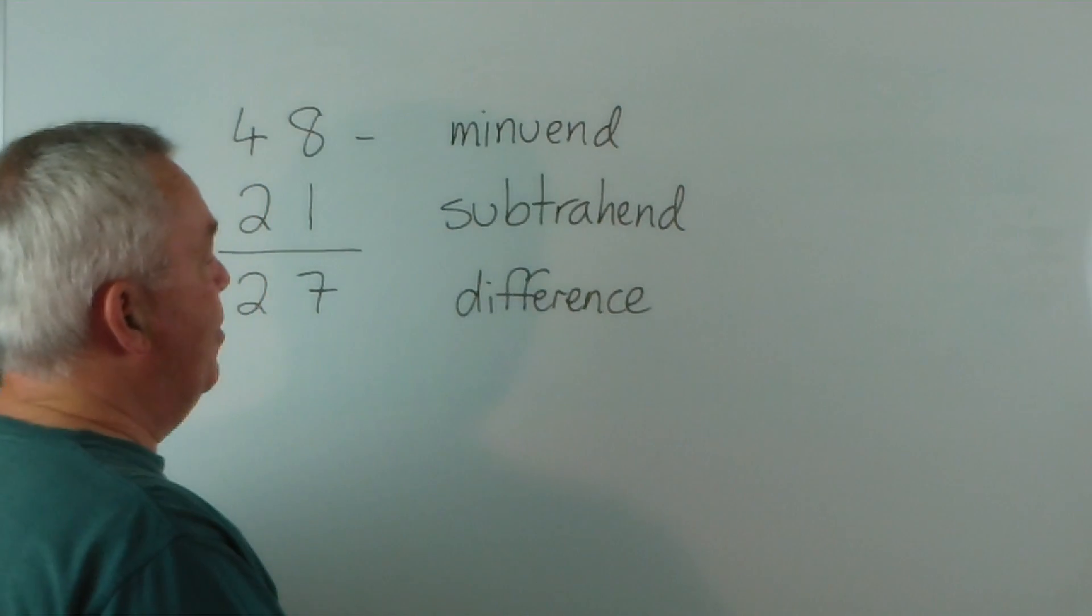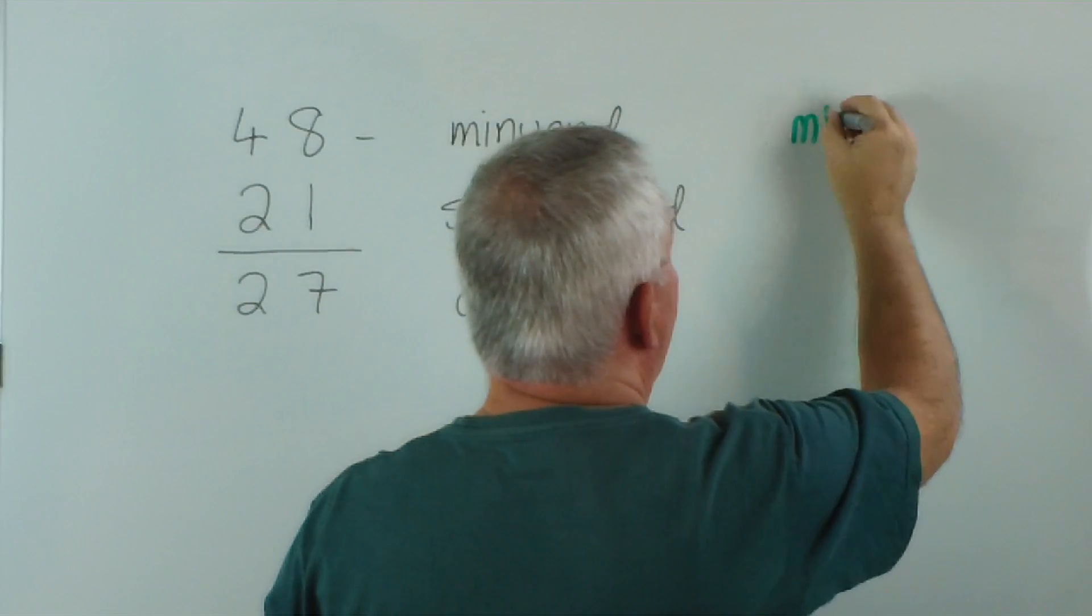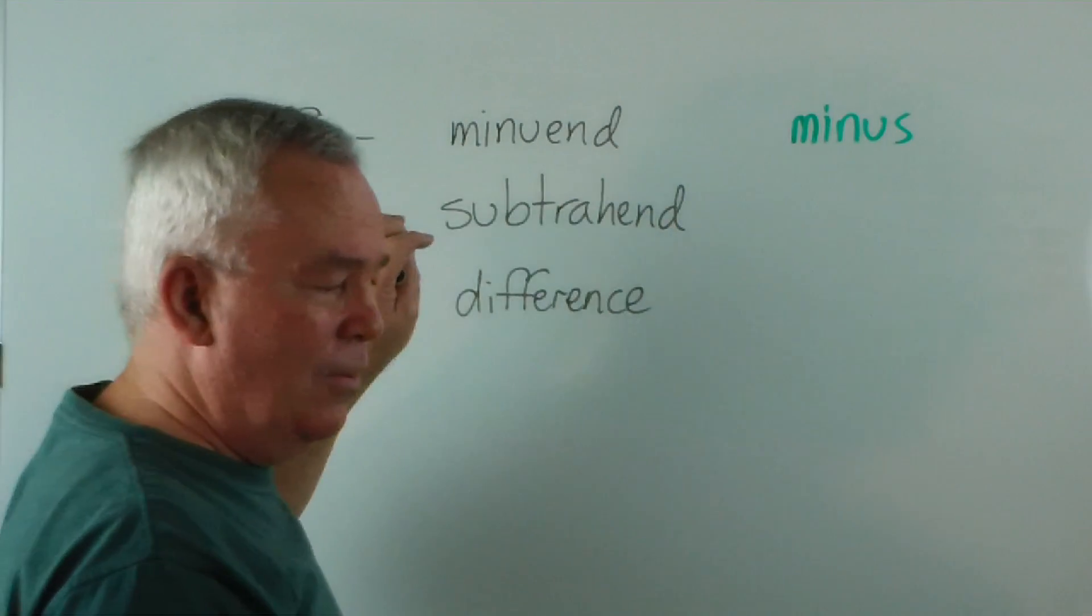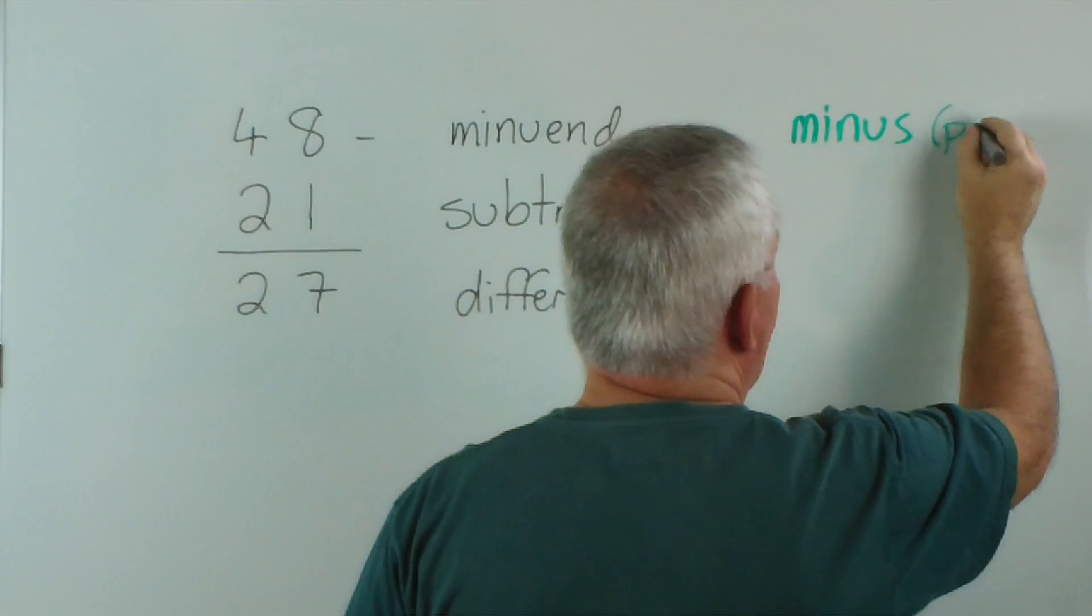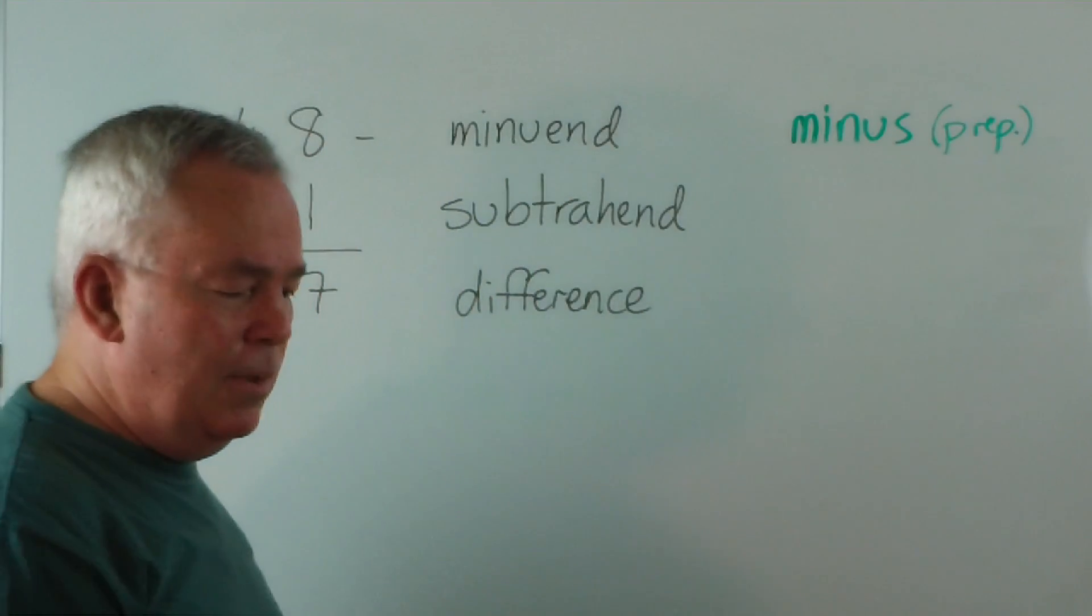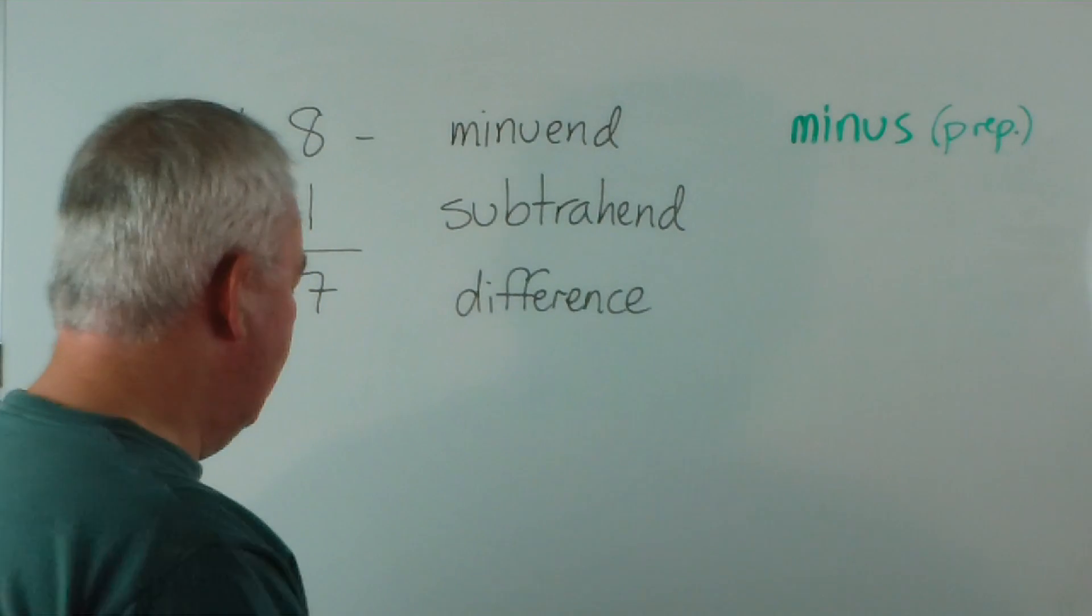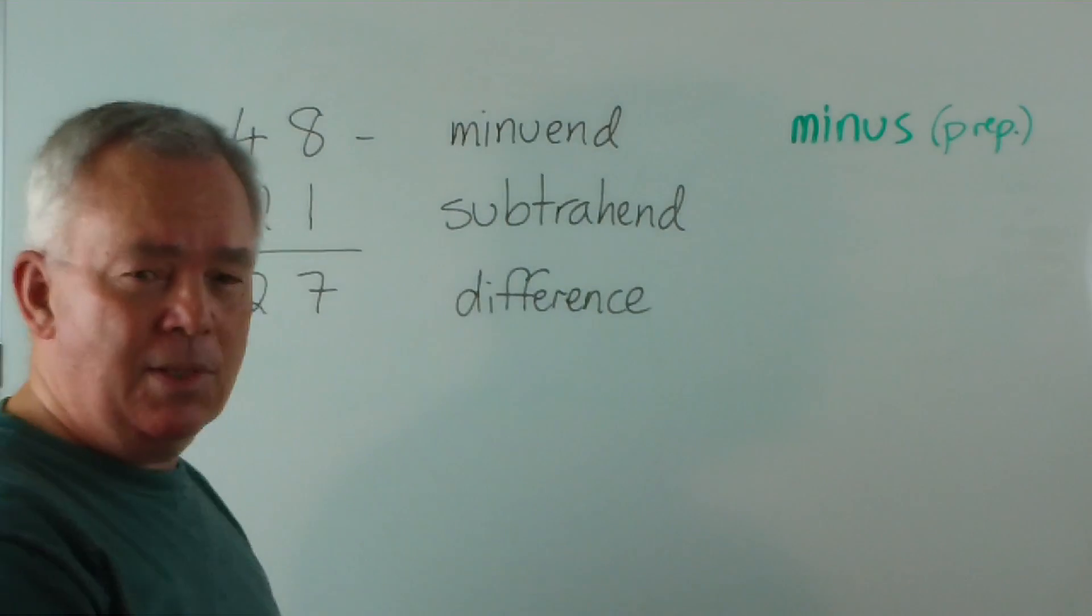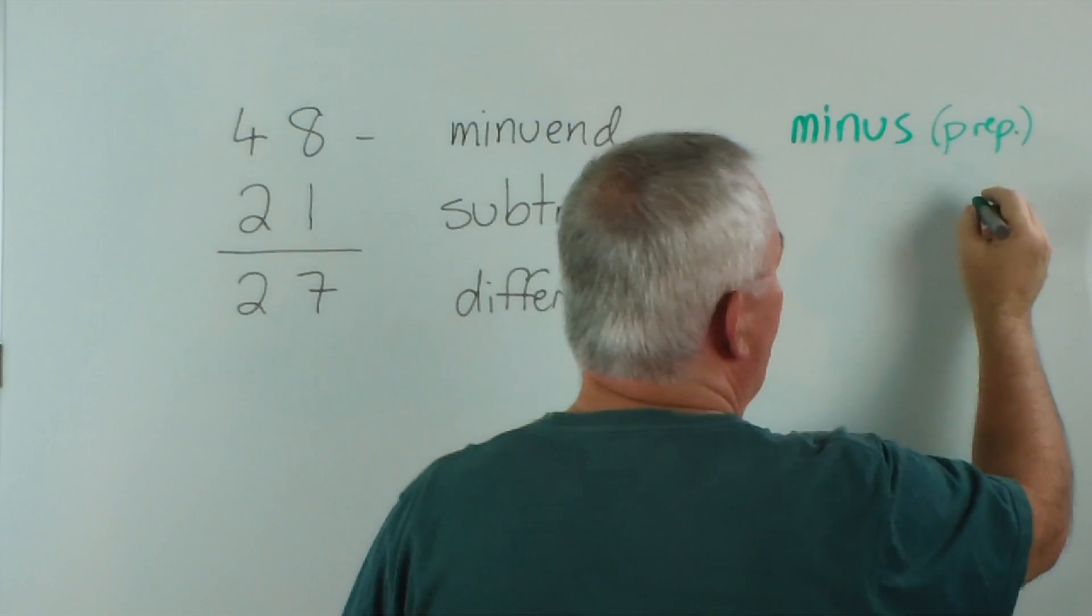Now, the first number that came about, surprisingly, is not one of these. It was this word. And it was simply used to describe what was happening. It's actually a preposition. And the word minus came from a Latin word meaning to diminish or reduce, basically. And obviously, that's what's happening with this number. It's been diminished or reduced. This came about in the late 1400s.